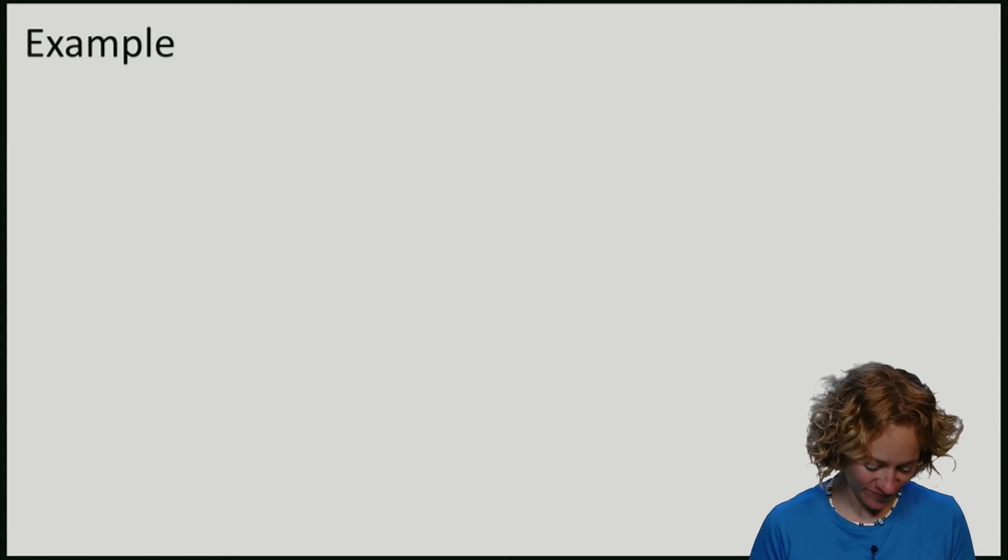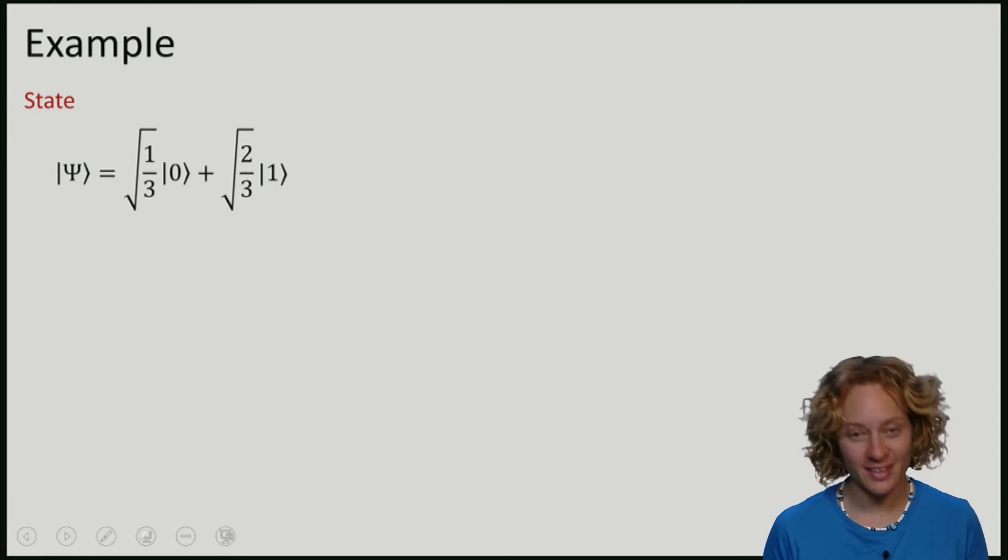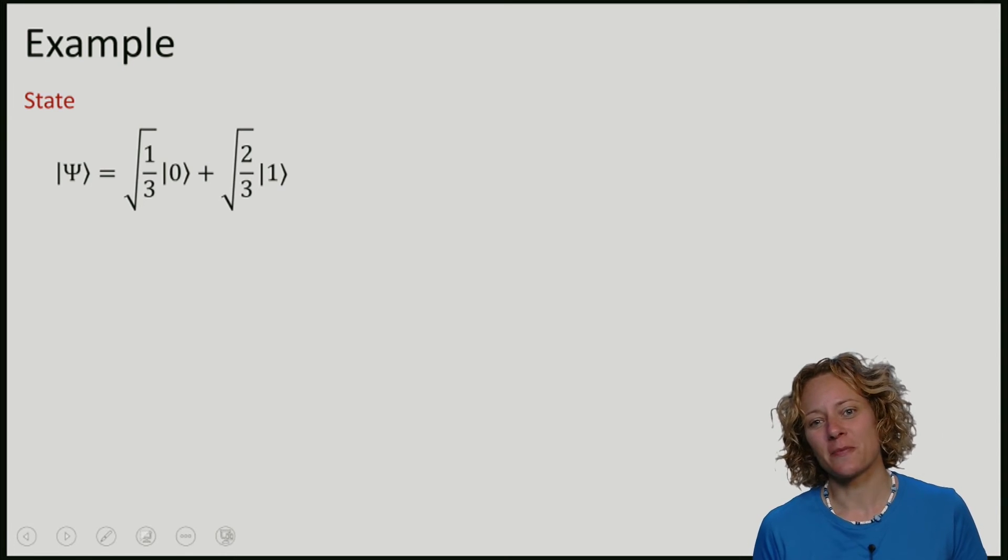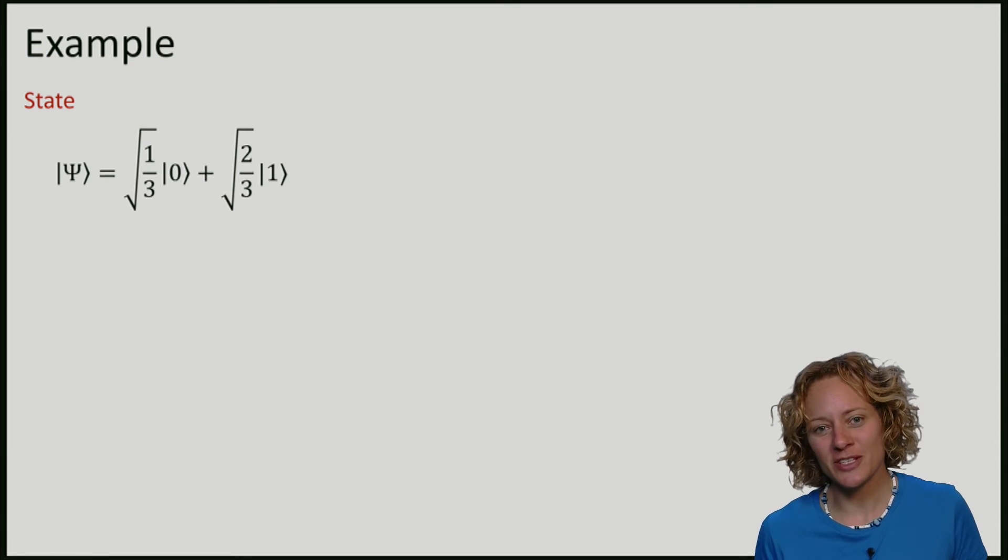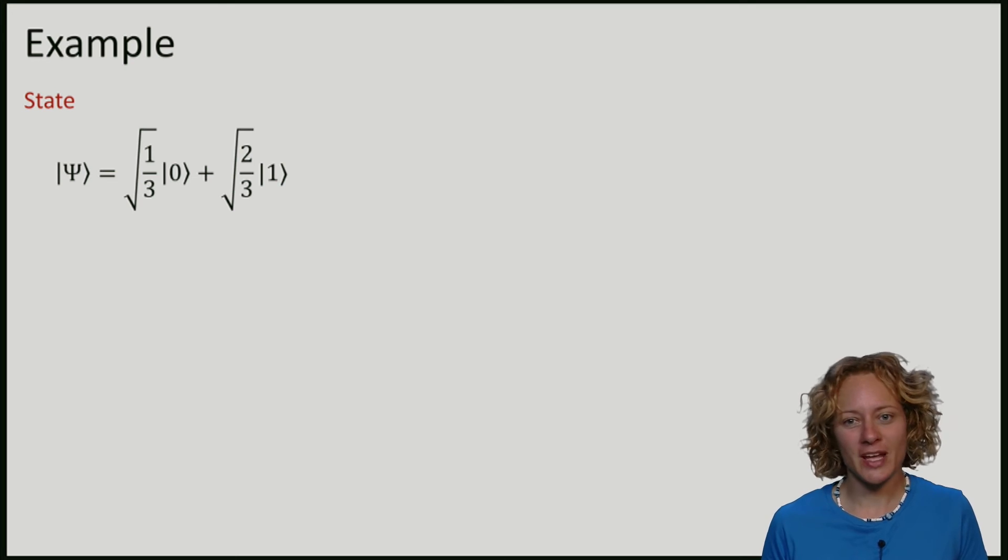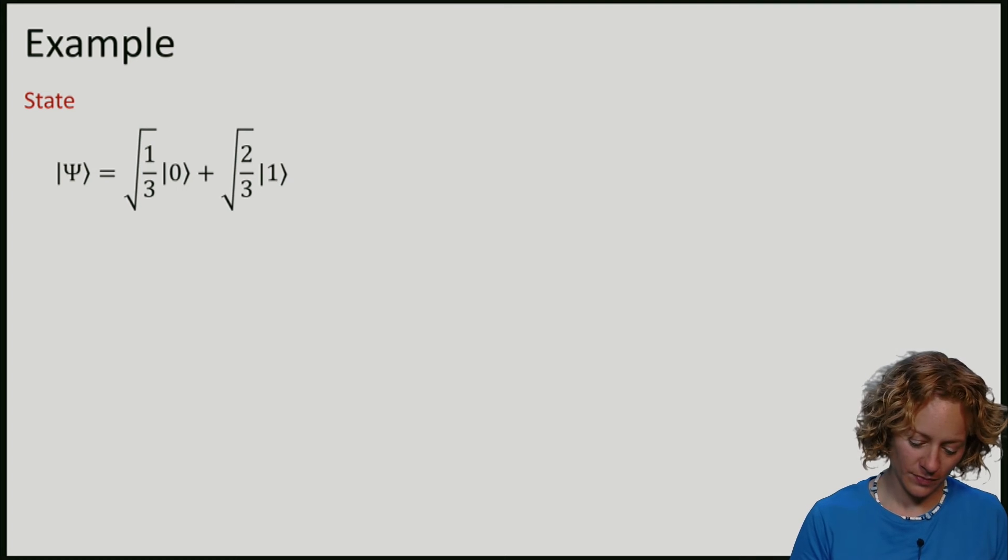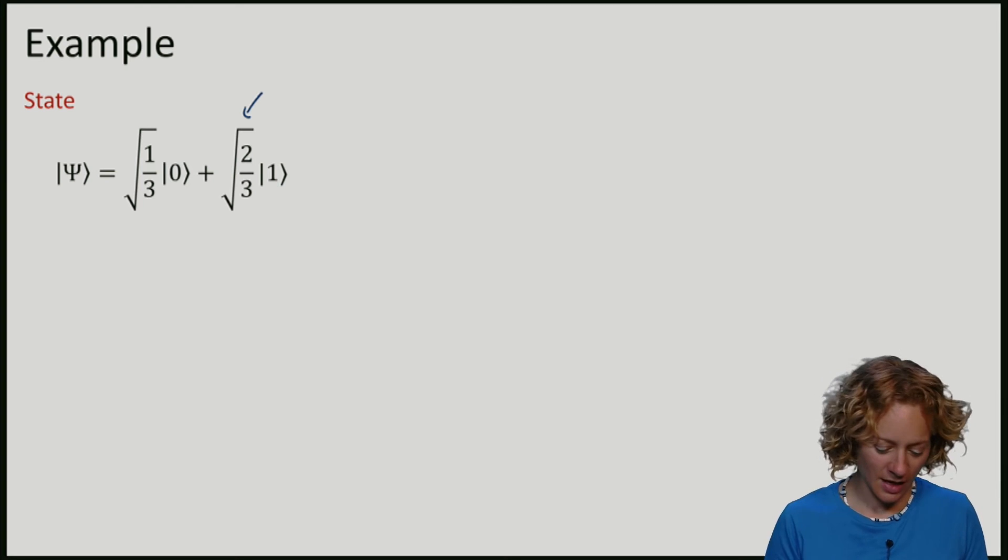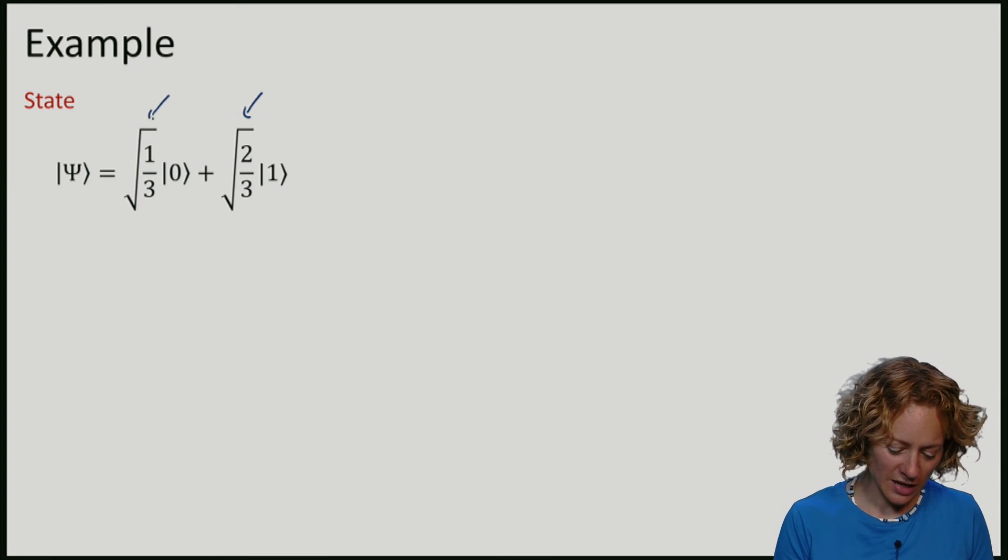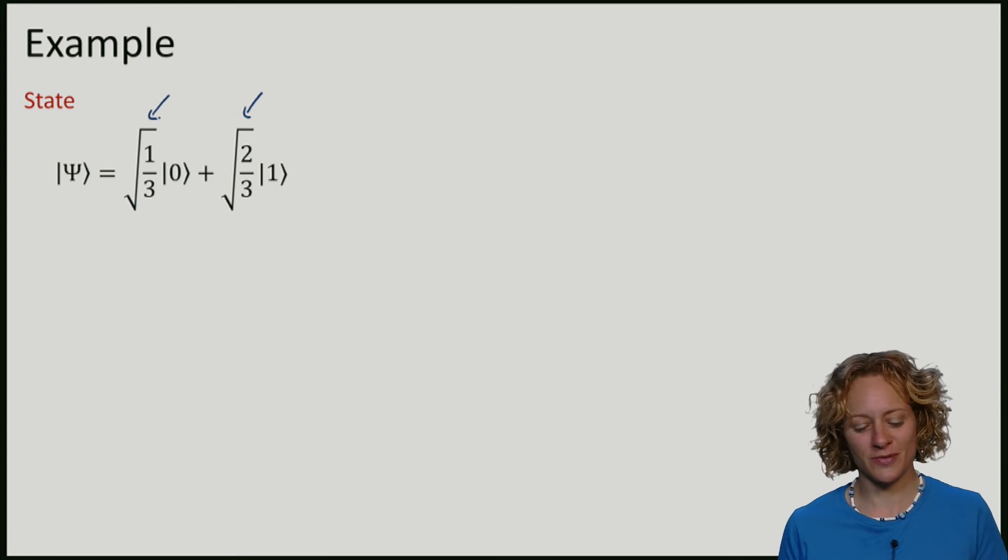Let's consider one example to get some practice. Let's consider measuring just a single qubit, psi, which is in a superposition between 0 and 1. And in our example, the 1 will have an amplitude of square root 2 over 3 and the 0 will have an amplitude of 1 over square root 3.